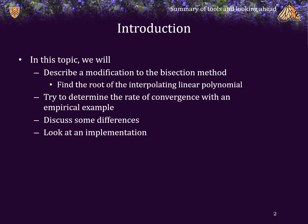In this topic we will describe a modification to the bisection method, basically where the next estimation is not the midpoint, but rather the root of the interpolating linear polynomial. We will try to determine the rate of convergence of this algorithm with an empirical example — we will look at an actual example and see what the rate of convergence is. We will then discuss some differences between this and the bisection method, and we will look at an implementation.